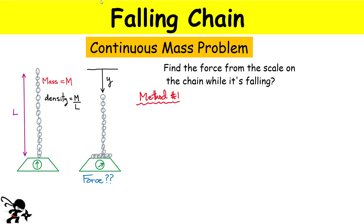We're going to start with method one. We're looking at the force of the scale acting on the chain, and I'm going to write it as two terms. The first term is the force acting on the chain that is at rest — call it F_rest — which is simply the weight of the length of chain that is not moving. The second term is an additional force because there is a link approaching the scale, moving at a certain speed.